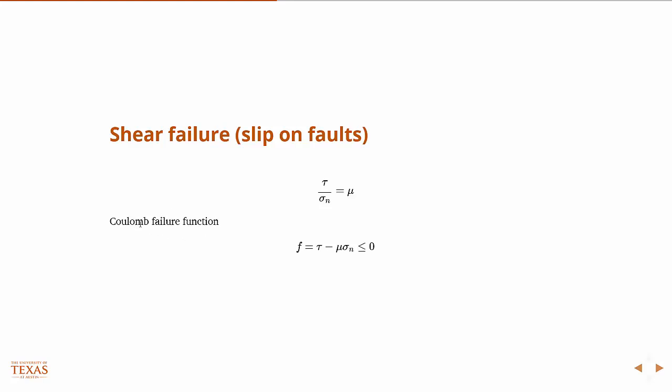So you have this Coulomb failure function, which just rearranges this equation. As long as this—where this mu, and this shouldn't be confused with the one we used previously, mu_i, which is sort of a material property or the strength of the rock—this actually is the friction coefficient. So we're not talking about mu_i, the internal friction. We're talking about actual friction on a fault.